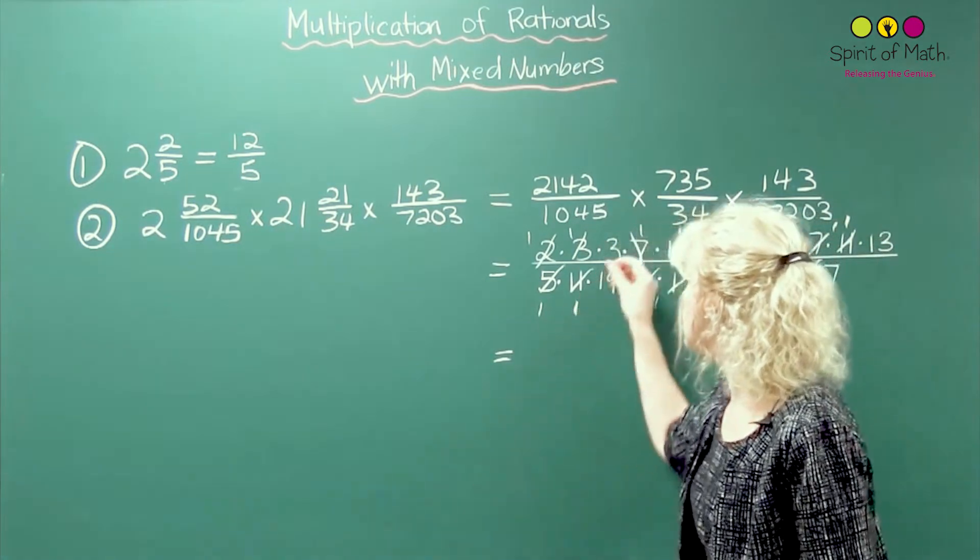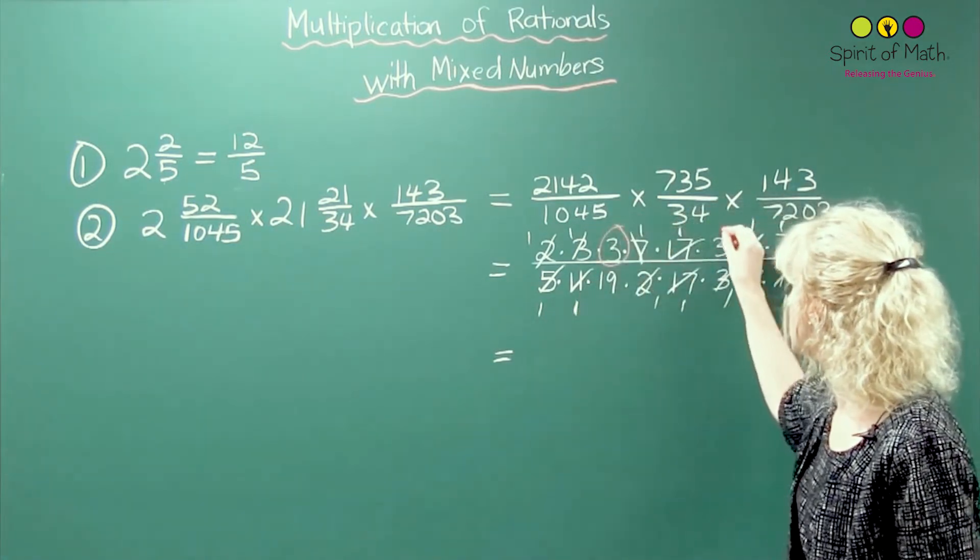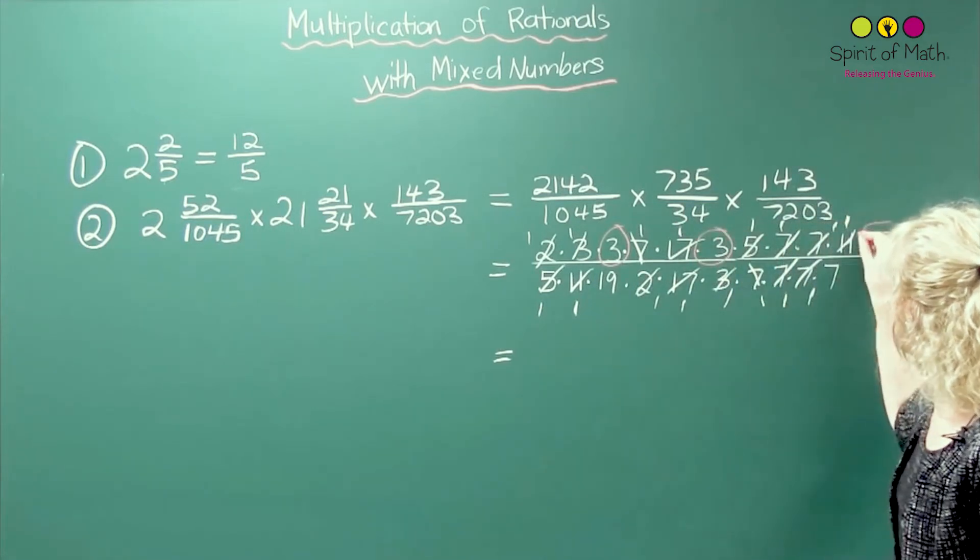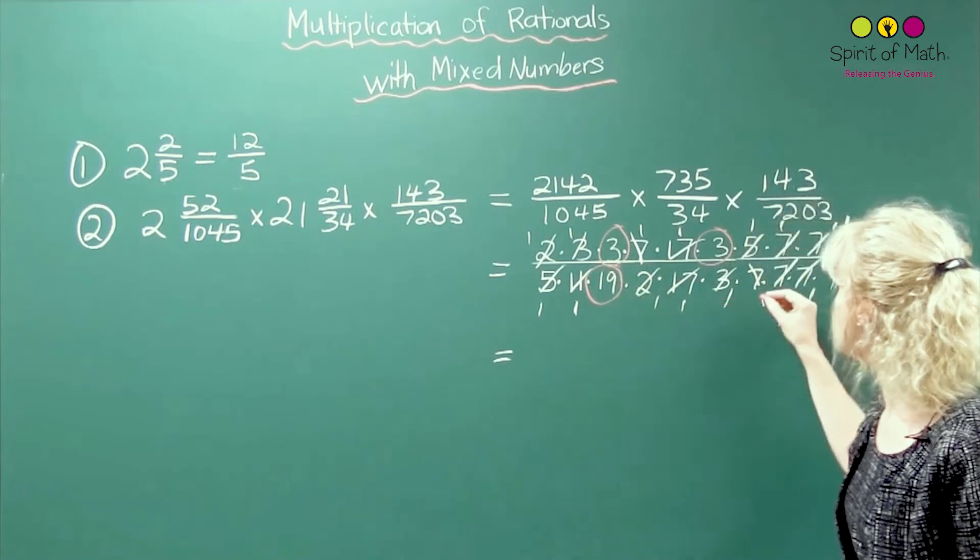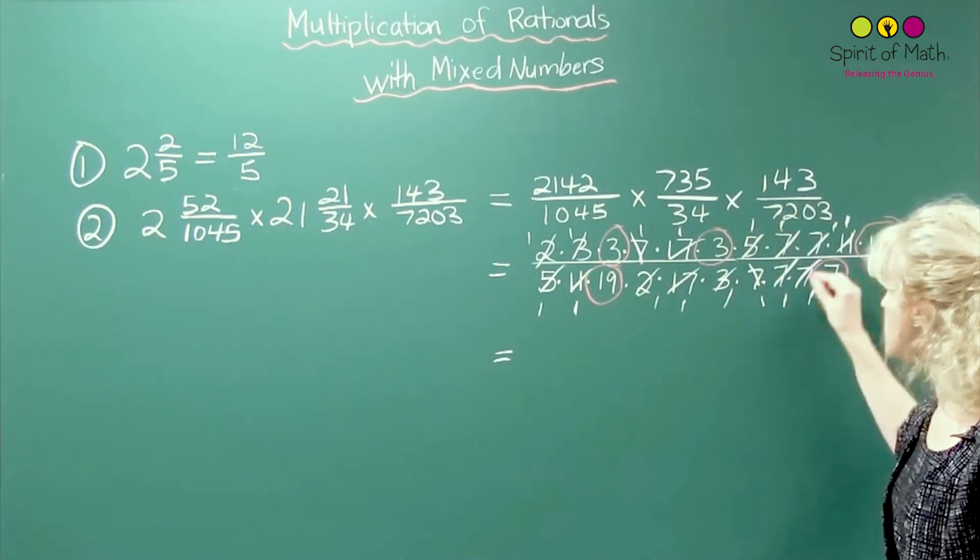So what you've got left then in the numerator, a 3 times a 3 times a 13, and the denominator, 19 times 7.